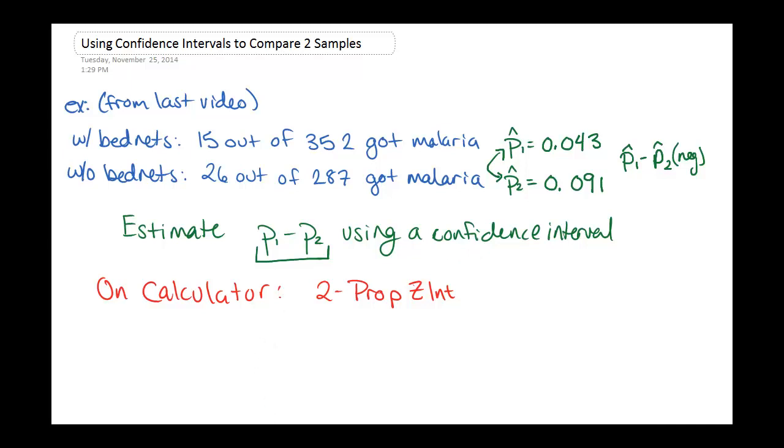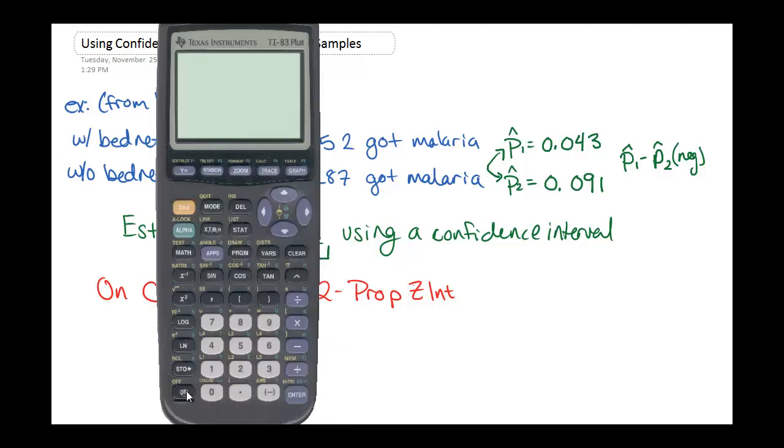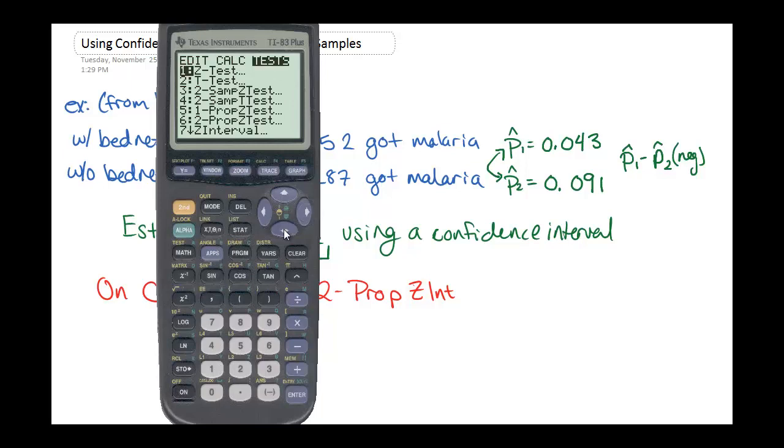So again, we're just going to do this on the calculator. In this case, this is in our test menu again. And we're doing a two proportion z interval instead of z test. So I think that's a little further down here. So two proportion z interval.